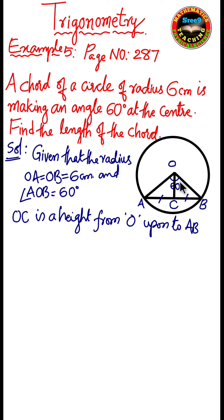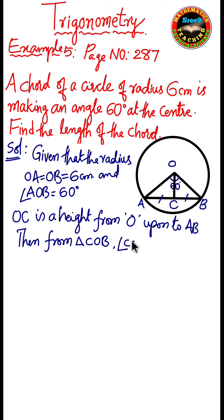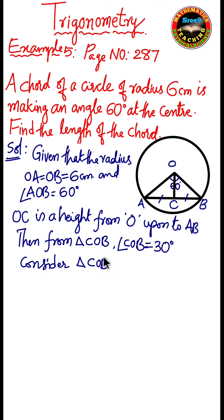To find the length of AB, I am taking triangle COB. From triangle COB, angle COB is 30 degrees because the angle is equally divided by the bisector OC. Considering triangle COB, I am taking the sine ratio at 30 degrees, since the angle is equally divided.